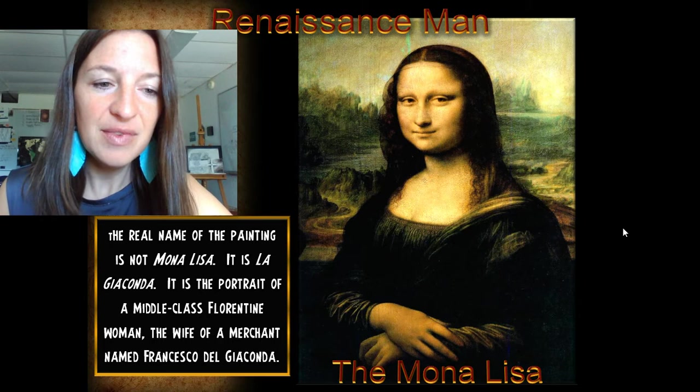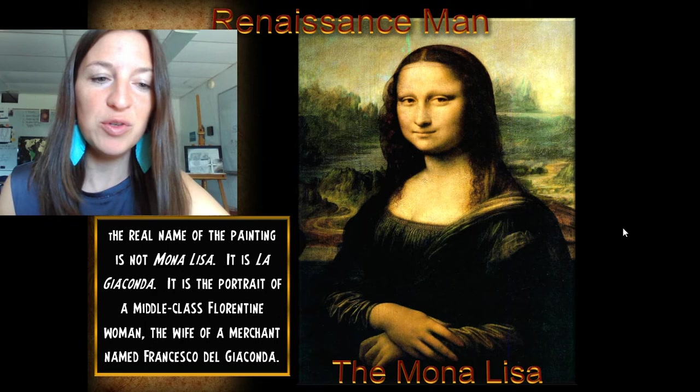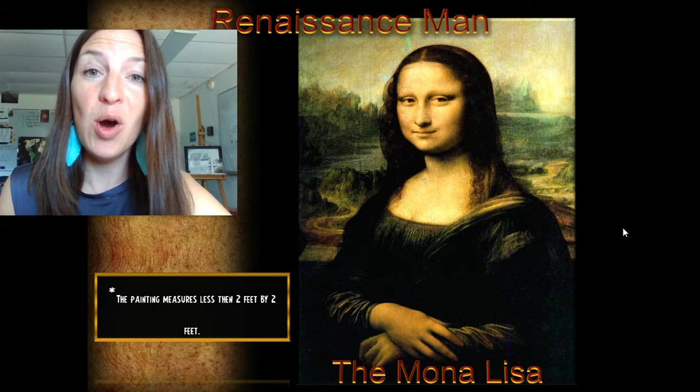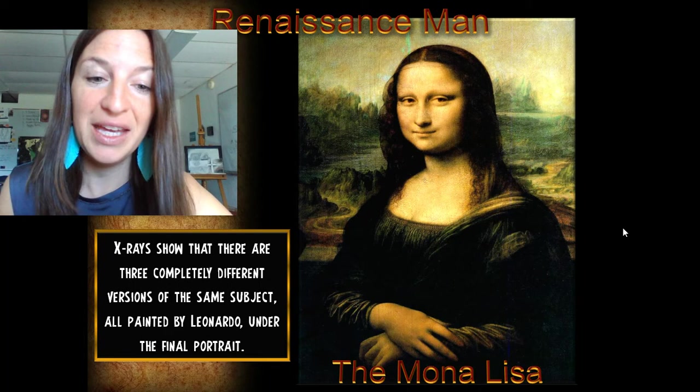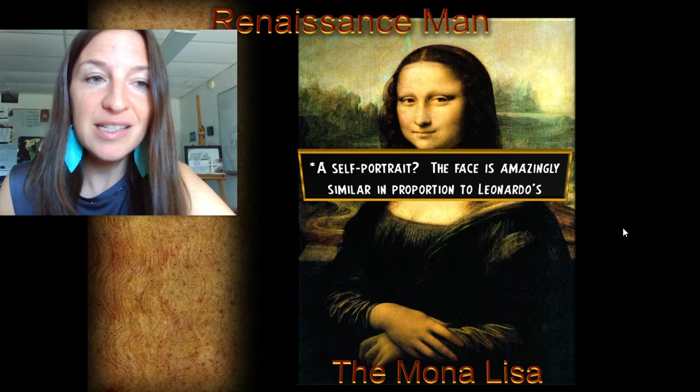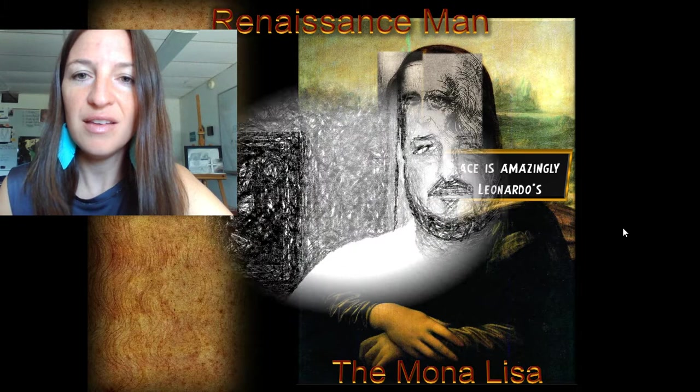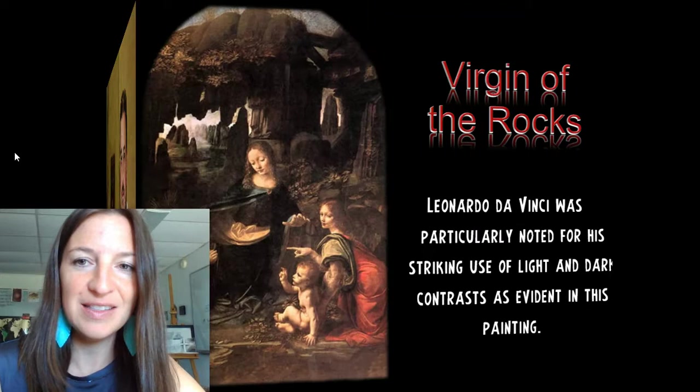The real name is La Gioconda. It's a portrait of a middle-class Florentine woman, the wife of a merchant whose name was Francesco del Gioconda. The painting is very small. X-rays show three completely different versions of the same painting. It's also wondered whether this is a self-portrait, as the face is similar to the painter's. You can see from my teacher friend visiting the painting just how small it really is — it's kind of anticlimactic when you go to see the Mona Lisa at the Louvre in Paris.